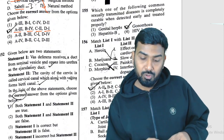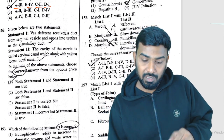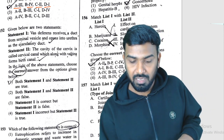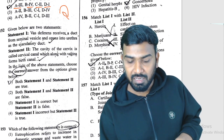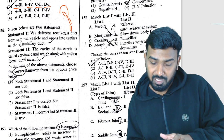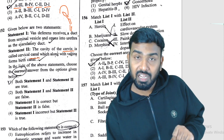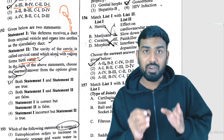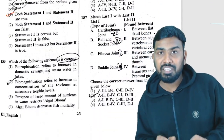Question 152: two statements are given. Statement one — vas deferens receives a duct from seminal vesicle and opens into urethra as ejaculatory duct — is correct. Statement two — the cavity of the cervix is the cervical canal, and with the vagina it forms the birth canal — is also correct. So both statements are true.